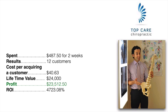The last one is Top Care Chiropractic — a chiropractor in Northright, Sydney. He spent $487.50 for two weeks and got 12 customers. Cost per acquiring each customer was $40.63. Because the lifetime value of each customer is about $2,000 per year, and he retains customers about 95% of the time, he would make about $24,000 — meaning a profit of $23,512.50, which is a return on investment of 4,723%. Even if some customers drop off, the return on investment is still going to be very high.